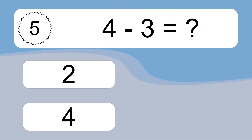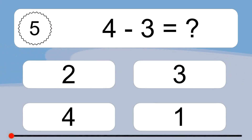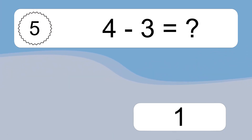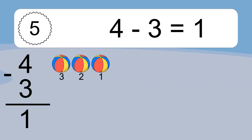4 minus 3 equals what? 4 minus 3 equals 1. Let's count it. 3, 2, 1.